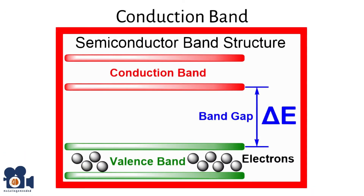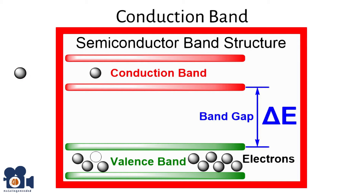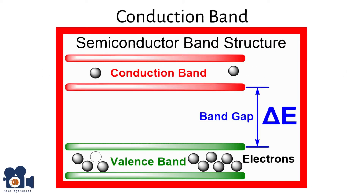Once an electron has made the jump to the conduction band, it is free to move throughout the semiconductor material under the influence of an electric field, contributing to the electric current. This movement is what we typically refer to as electrical conduction in semiconductors.